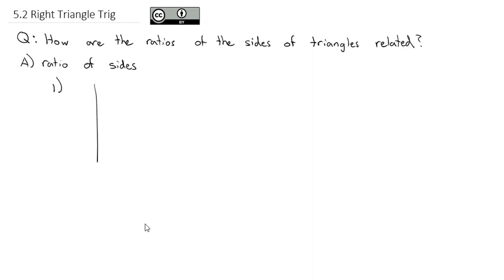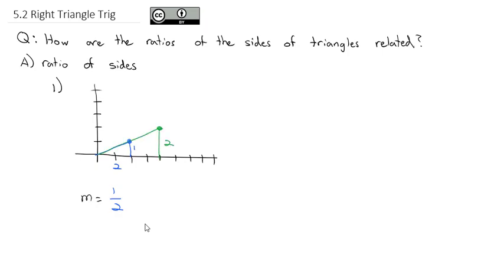If I take a grid here going 1 through 8 across and 1 through 4 up the side, and I draw a triangle that rises 1 and runs 2 from the origin, we would say that the slope of that triangle is rise 1, run 2, or one half. I can continue on with this line, rising another 1 and running another 2 to give a bigger triangle. Now it rises 2 and runs a total of 4, so the slope of the green triangle is 2 over 4, which reduces to one half.